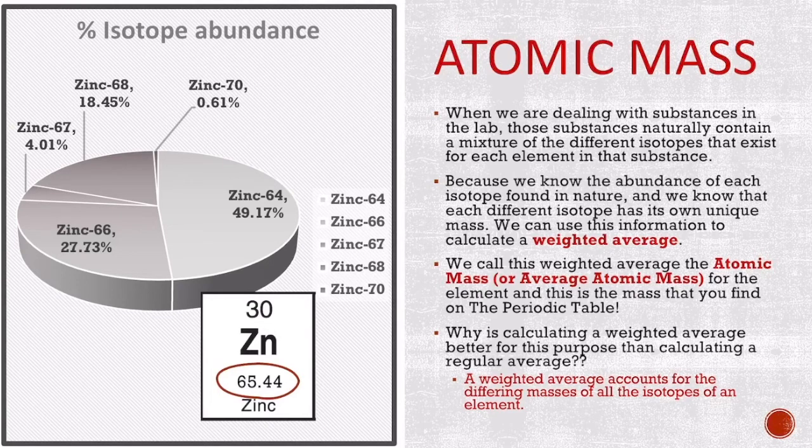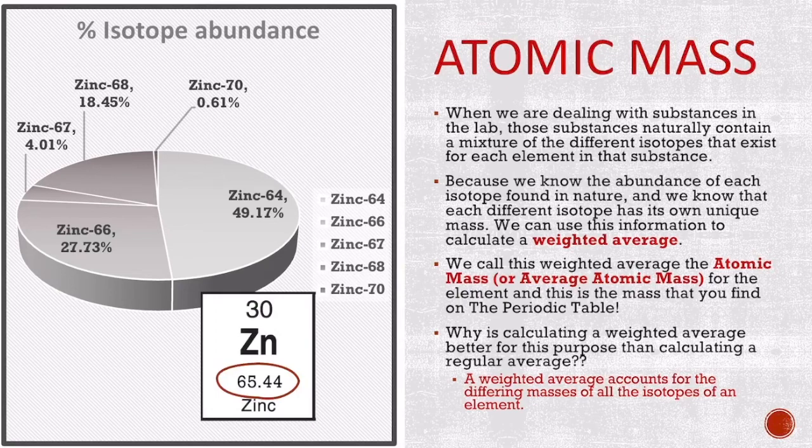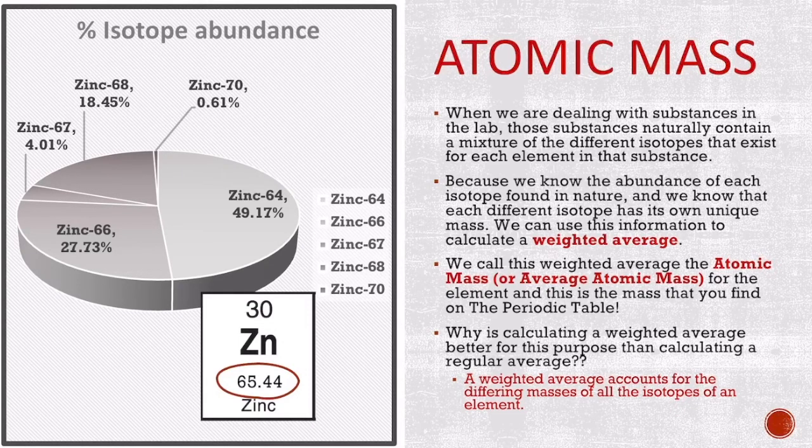One question I get asked often is, why is it better to calculate a weighted average rather than just calculating the regular average? The reason is because the weighted average actually takes into account how abundant a particular isotope is. If you have an isotope that's 1% of all atoms versus an isotope that's 99%, if you just took a regular average, you wouldn't really get a true value for what you can expect the mass of a sample to be. But if you take a weighted average, the final mass reported is going to be closer to the more abundant isotope. So it's really important to take a weighted average when we're doing this.